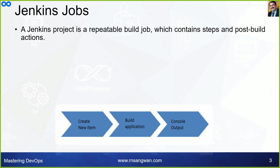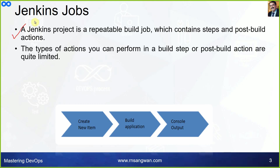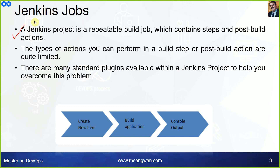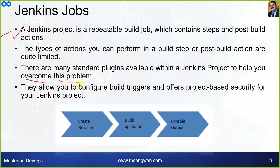A Jenkins project is a separate build job which contains steps and post-build actions. There are many standard plugins available within a Jenkins project to help you overcome limitations in what you can do in a build step or post-build action. They allow you to configure build triggers and offer project-based security for your Jenkins project.